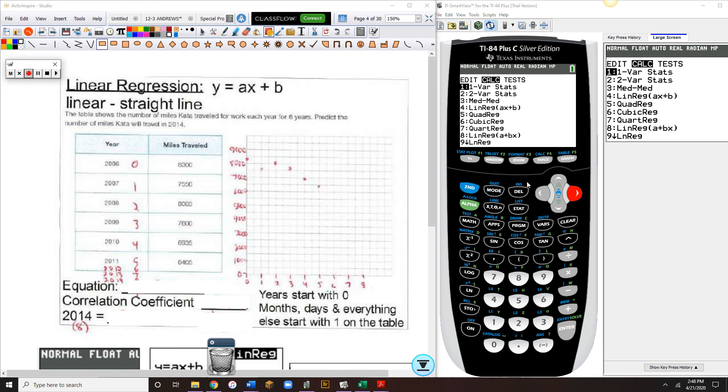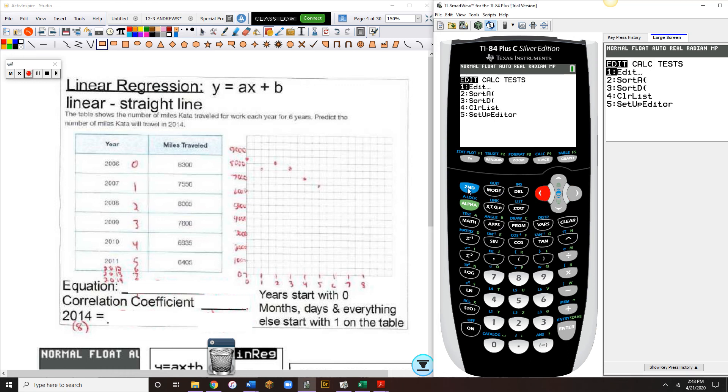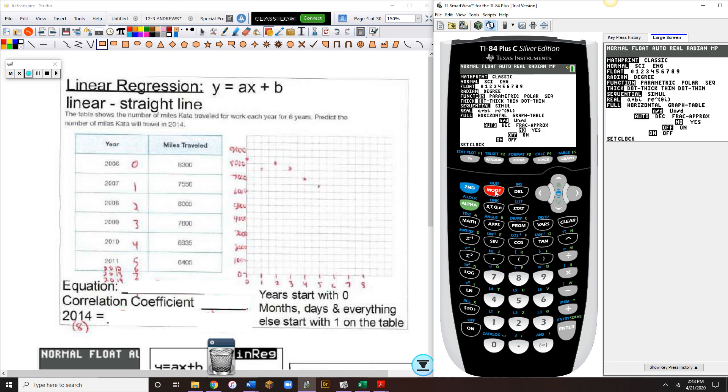So to do the regression equation, let me start from the beginning. So you've just turned on your calculator. It's probably a good idea, second plus 712, to reset the memory. And mode, because I reset my memory, I have to turn my stat diagnostics back on. Every time you reset the memory, you have to turn that back on.